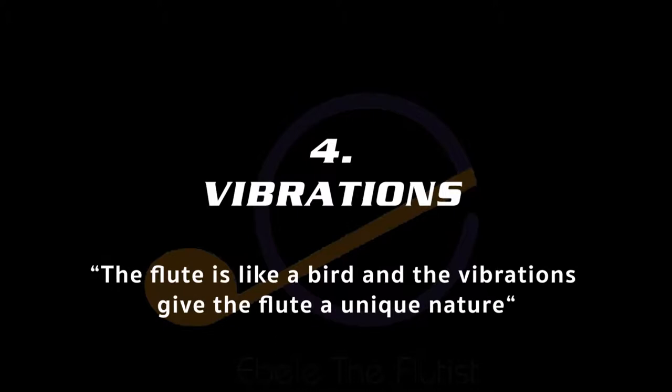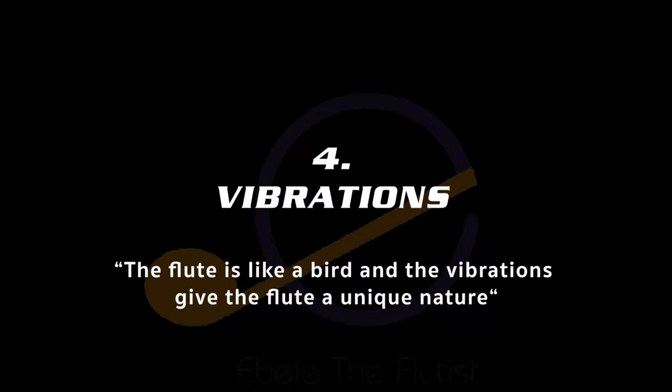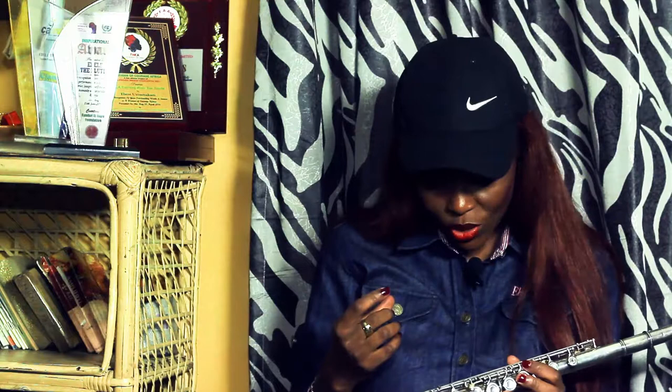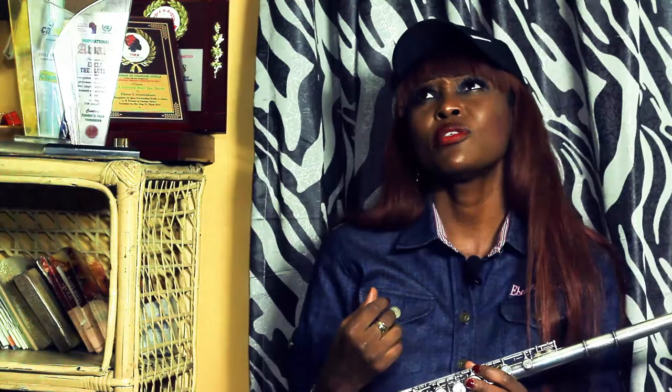The fourth lesson is vibrations. The flute is like a bird, and the vibrations made in playing the flute give the flute a unique nature of different kinds. These are some of the tricks you have to know about the flute which other instruments do not have. Vibrations are a very wonderful part — they don't come in all instruments. Classical players use vibrations very well, more so than contemporary players.